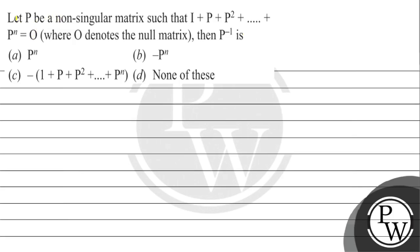If you receive the question: let P be a non-singular matrix such that I plus P plus P squared plus ... plus P to the power n equals 0, where 0 denotes the null matrix. Then P inverse is: option A — P to the power n; option B — minus P to the power n; option C — minus of 1 plus P plus P squared plus ... plus P to the power n; option D — none of the above.